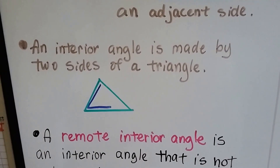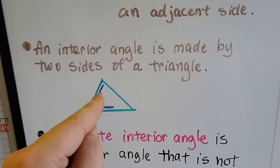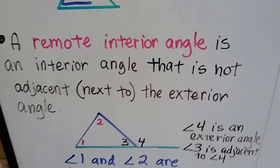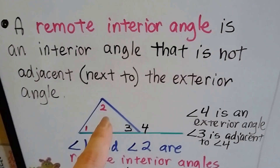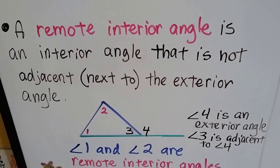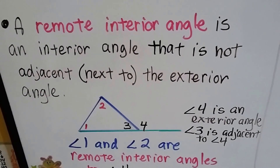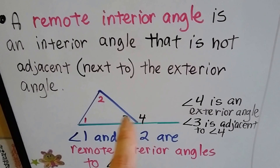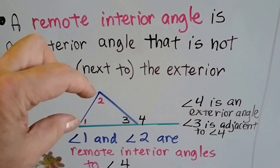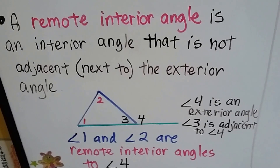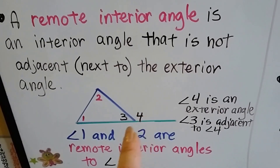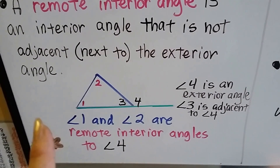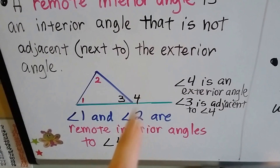An interior angle is made by two sides of a triangle — this side and this side make that interior angle. Now we have a remote interior angle. It's an interior angle on the inside that is not adjacent — not next to the exterior angle. So here's exterior angle four; angle three is next to it, so that's not the remote interior angle. It's angles one and two, because they're the ones not next to four. Angle one and angle two are the remote interior angles to angle four.